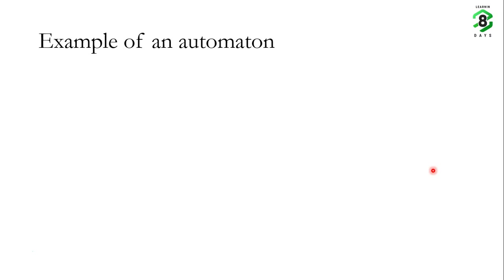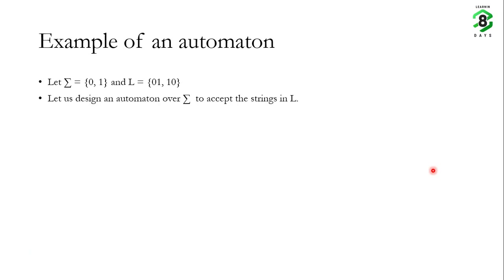Now let us look at an example of an automaton. 'Automaton' is the singular form, by the way, and 'automata' is plural. Let us say our alphabet contains only two symbols, 0 and 1, and we have a language in which there are only two words: 01 and 10. We will design an automaton over this alphabet to accept the strings in the given language — a conceptual machine which will accept all the words in language L, which are 01 and 10.